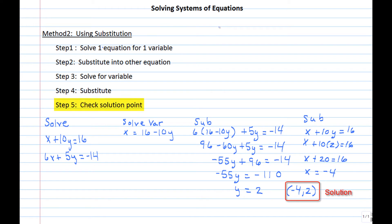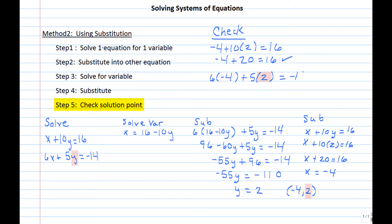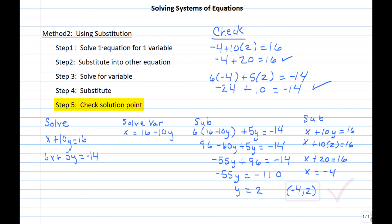To check: plugging into the first equation, negative 4 plus 10(2) equals negative 4 plus 20, which equals 16 — that checks. Plugging into the second equation, 6(negative 4) plus 5(2) equals negative 24 plus 10, which equals negative 14 — that checks as well. This completes the lesson on solving systems by substitution.